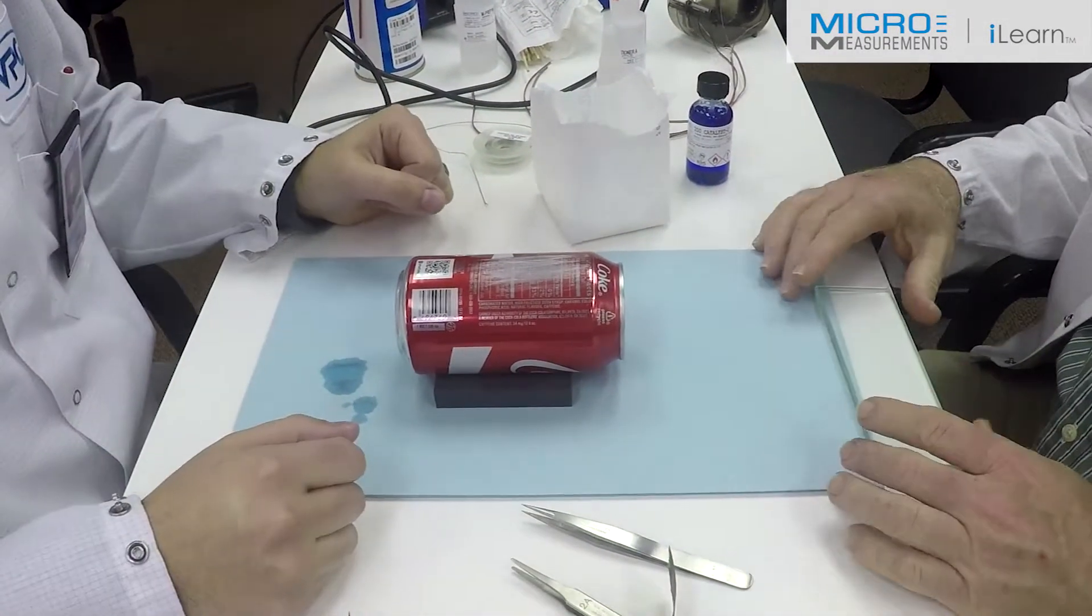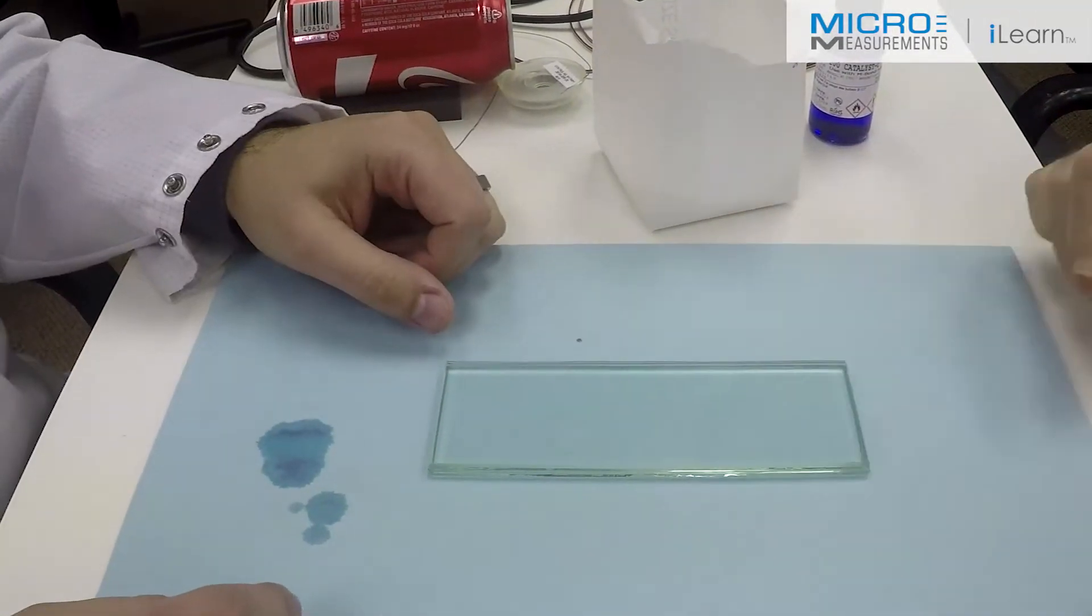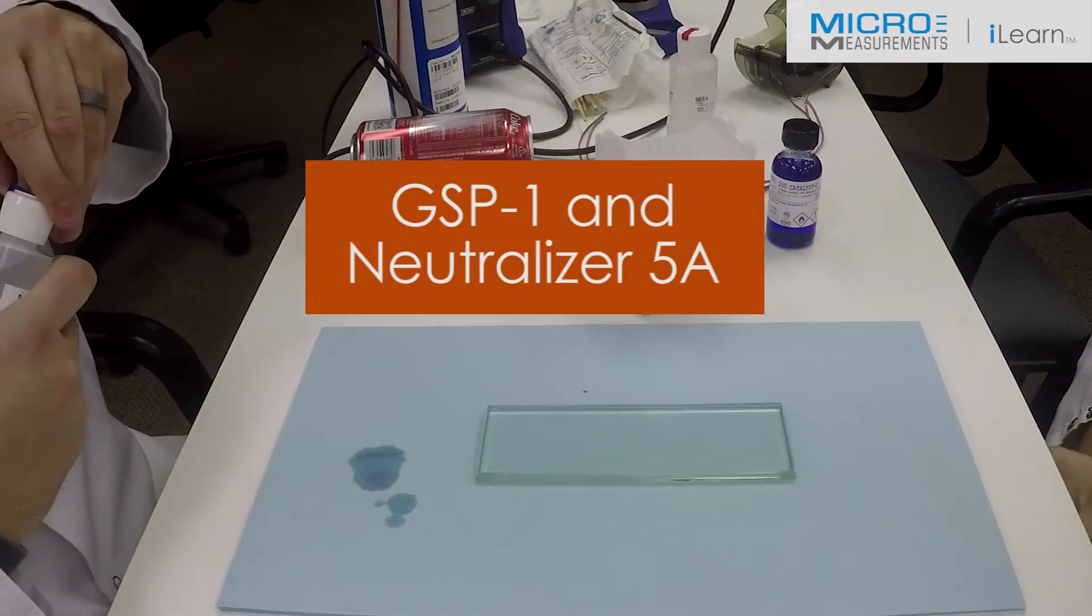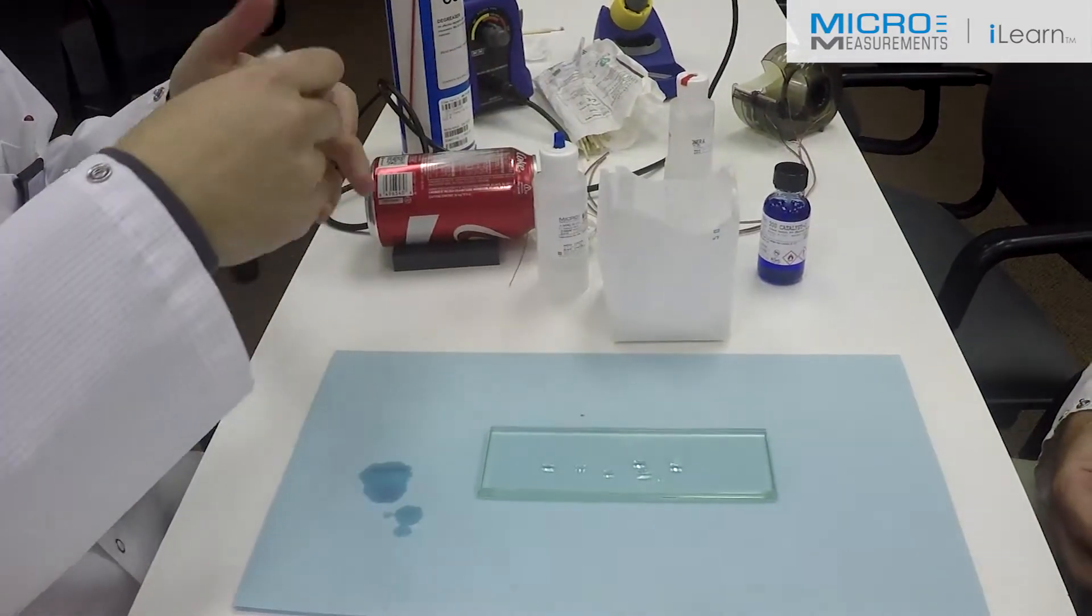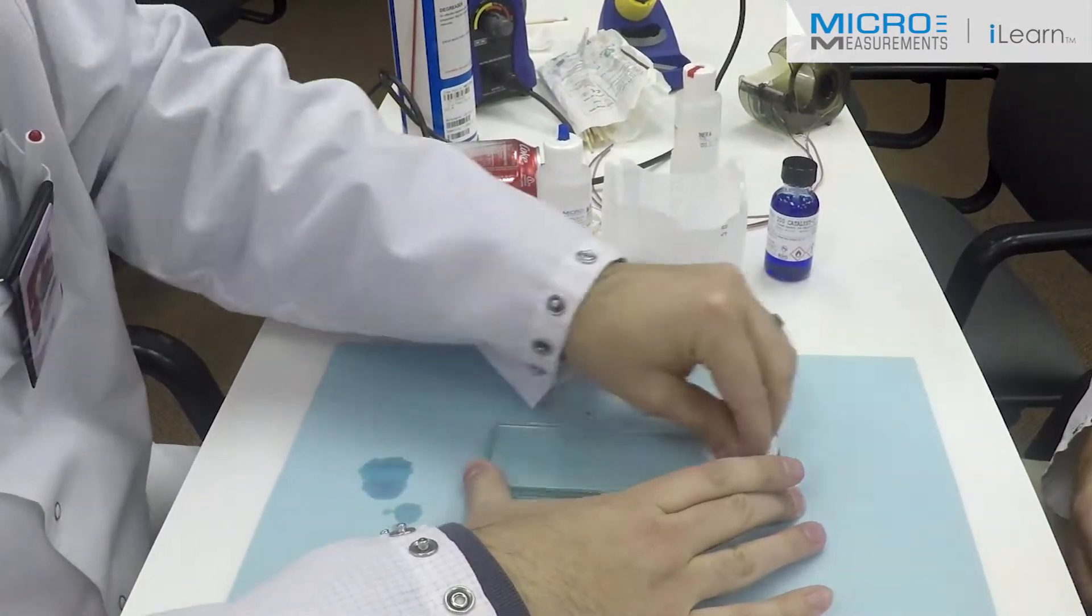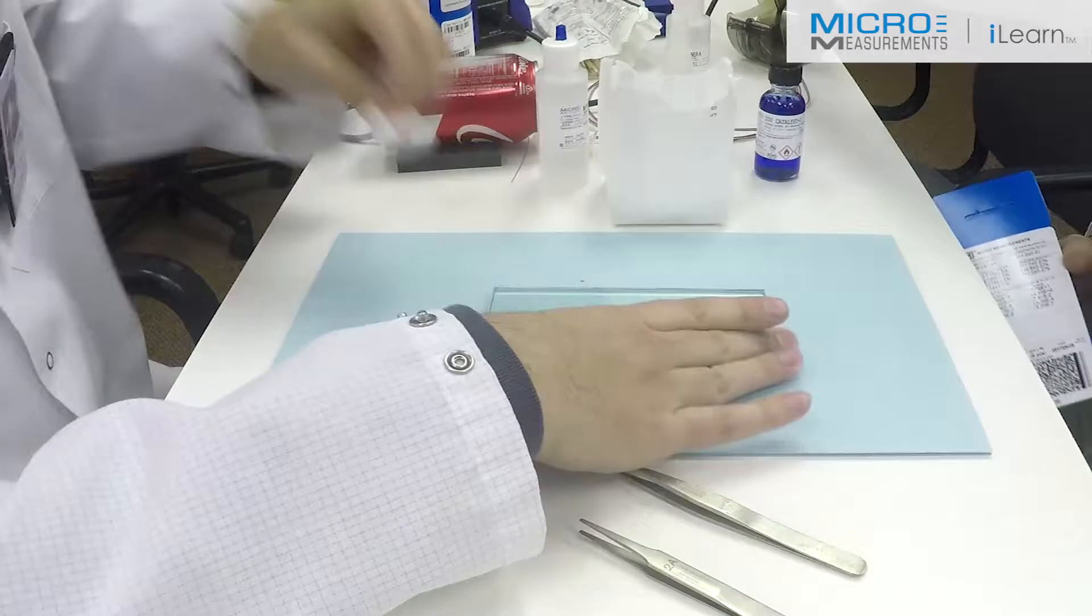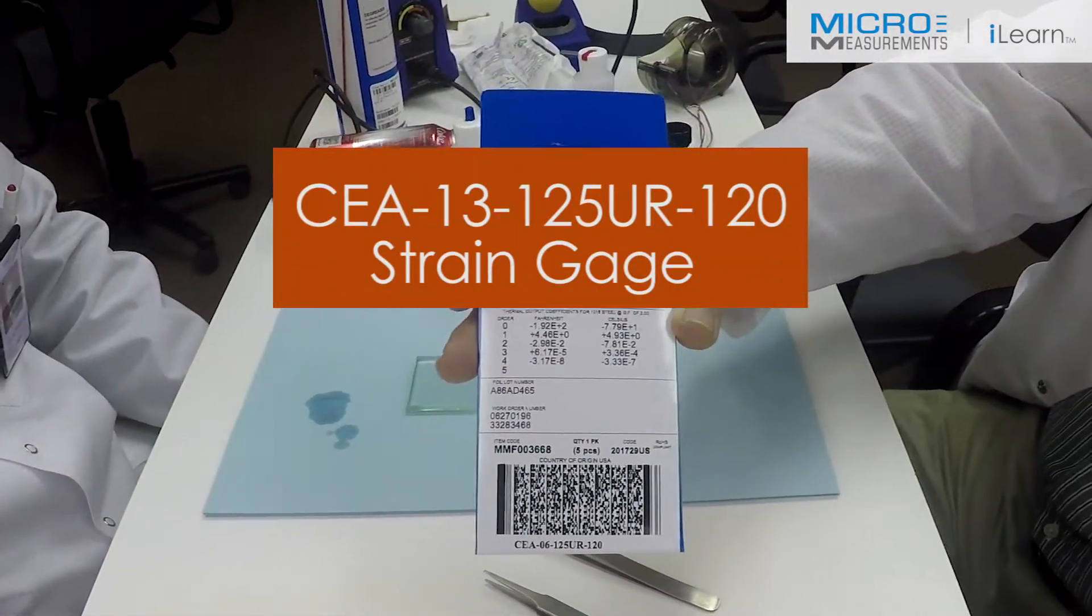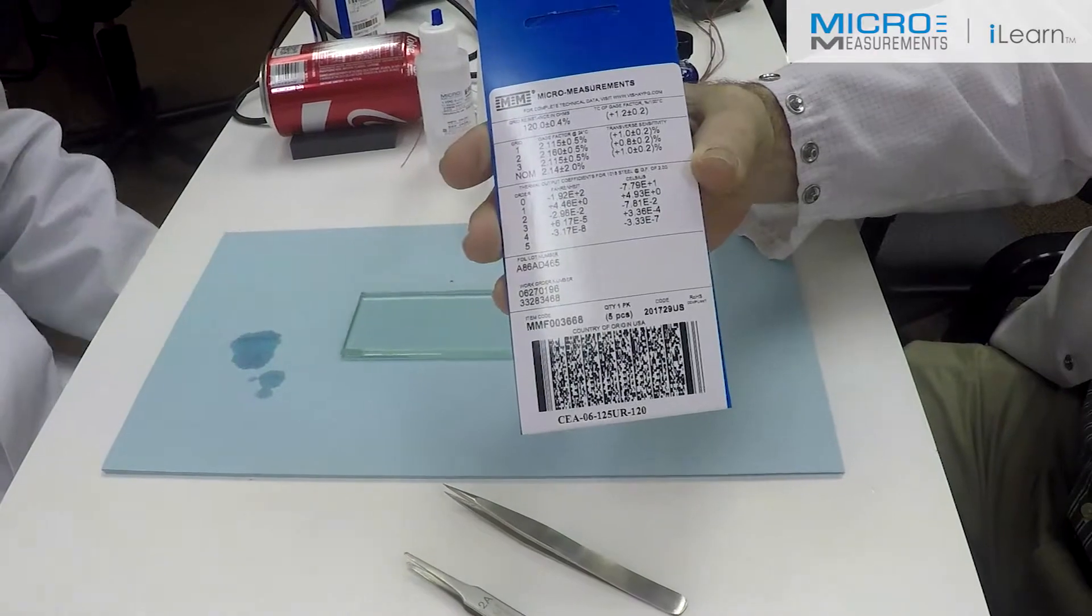Now that Colin has completed the surface preparation, we need to set the can somewhere out of harm's way and prepare the gauge for bonding. Got a glass plate here, we need to clean that with Neutralizer 5A and a cotton tip or a gauze sponge. This will be our layout area for the strain gauge. Today we're going to be using the CEA-125UR120. This gauge is going to be used so we can get a three element rosette calculation.